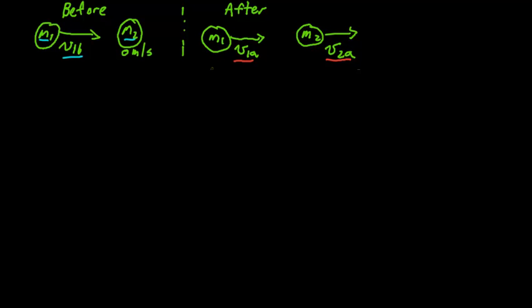In this video, I'm going to derive the equation for the speeds after a collision, given two objects M1 and M2 — those are their masses. We're going to start off with a case where we have one object moving in and the other one stationary. I'm going to assume an elastic collision so that kinetic energy is conserved.